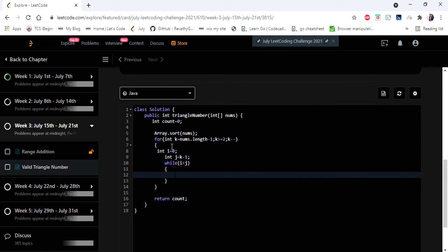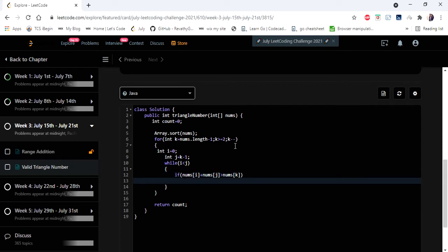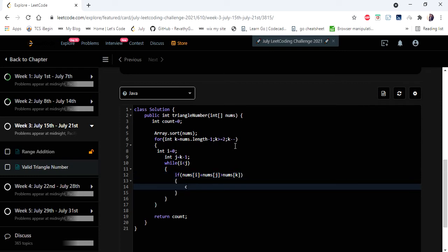And I'm going to check if my value at pointer i and value at pointer j is greater than value at pointer k. If that matches, then we are going to find our count.